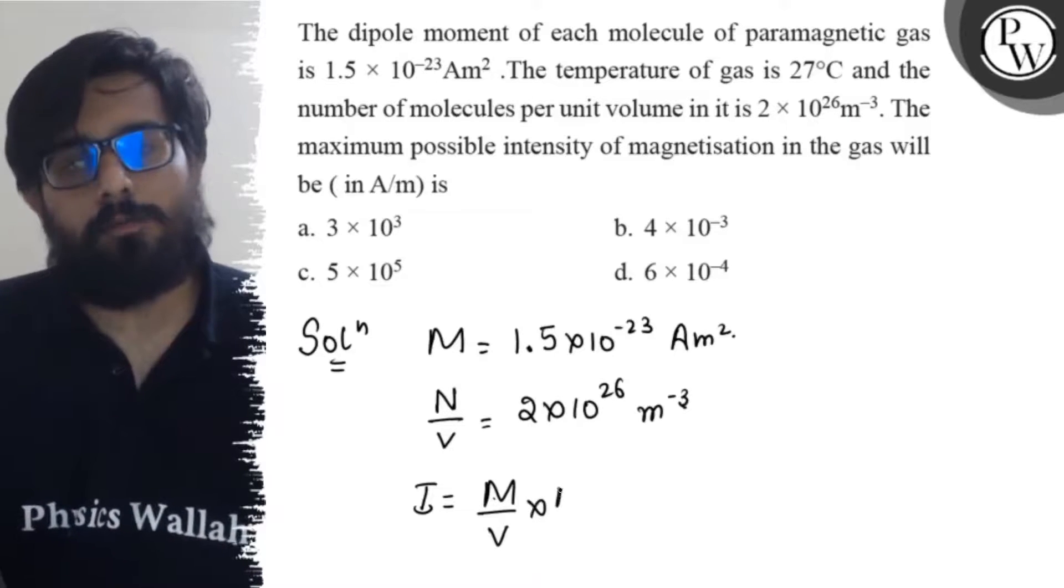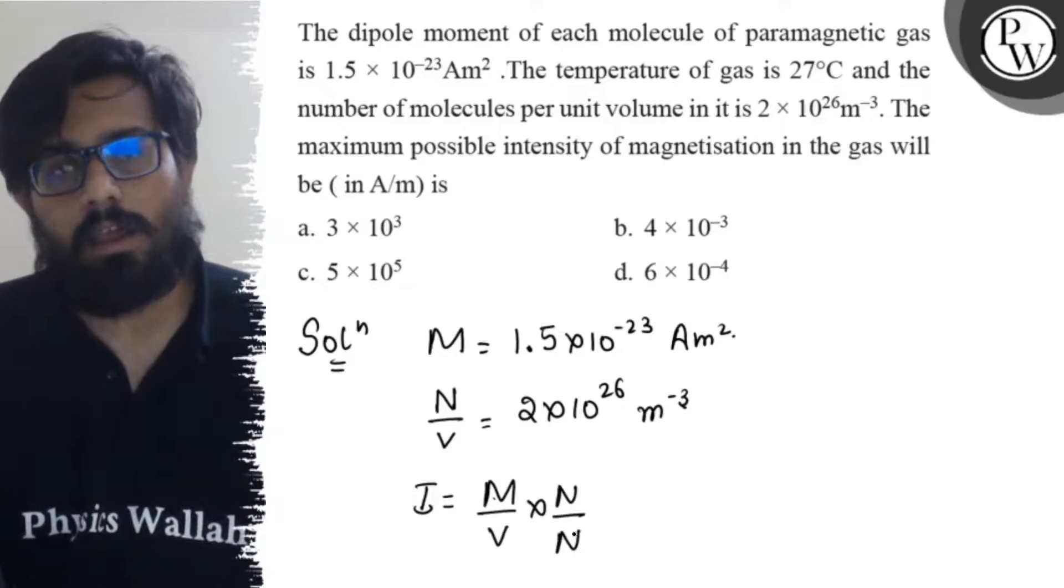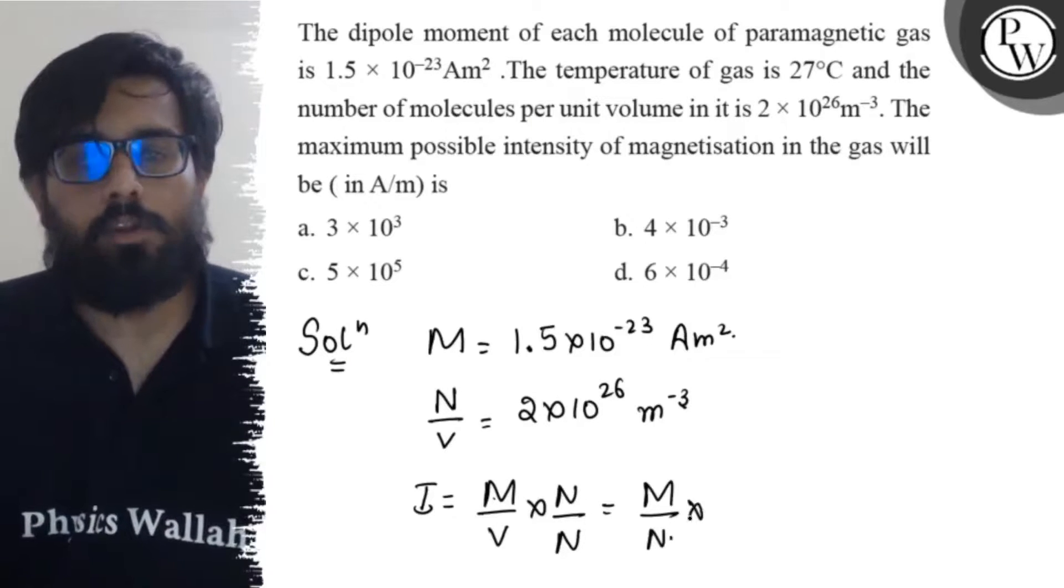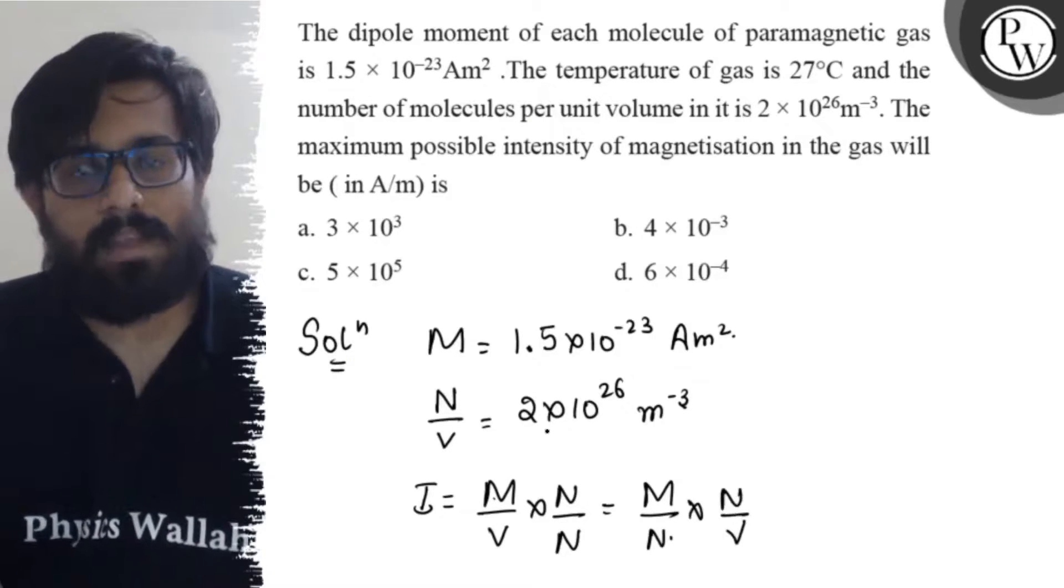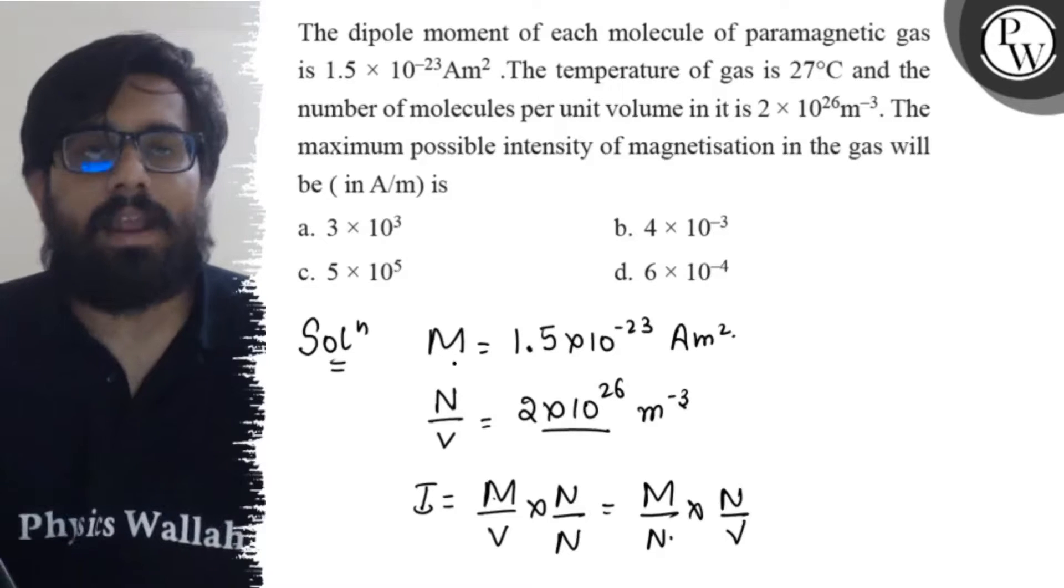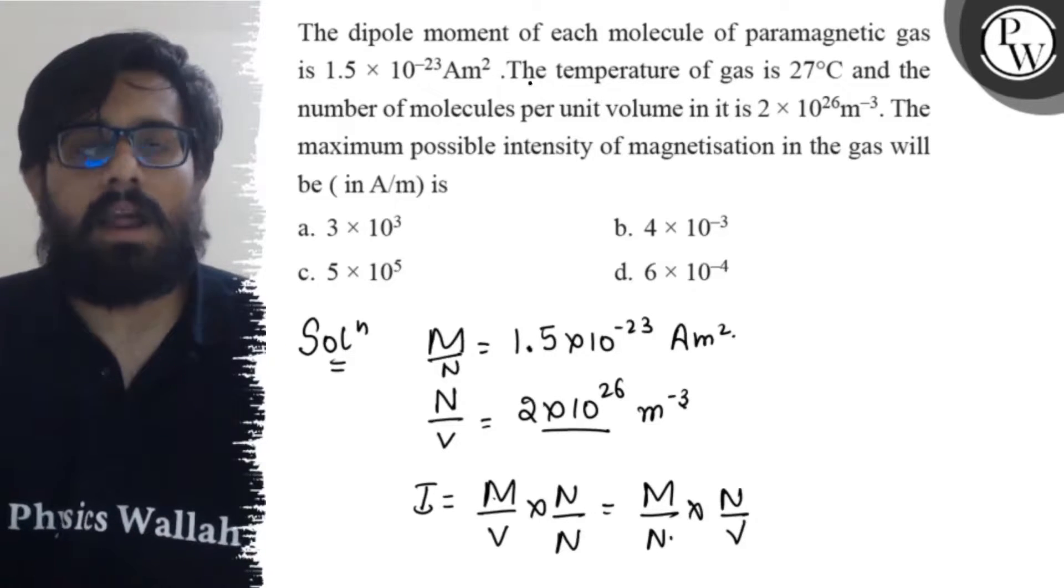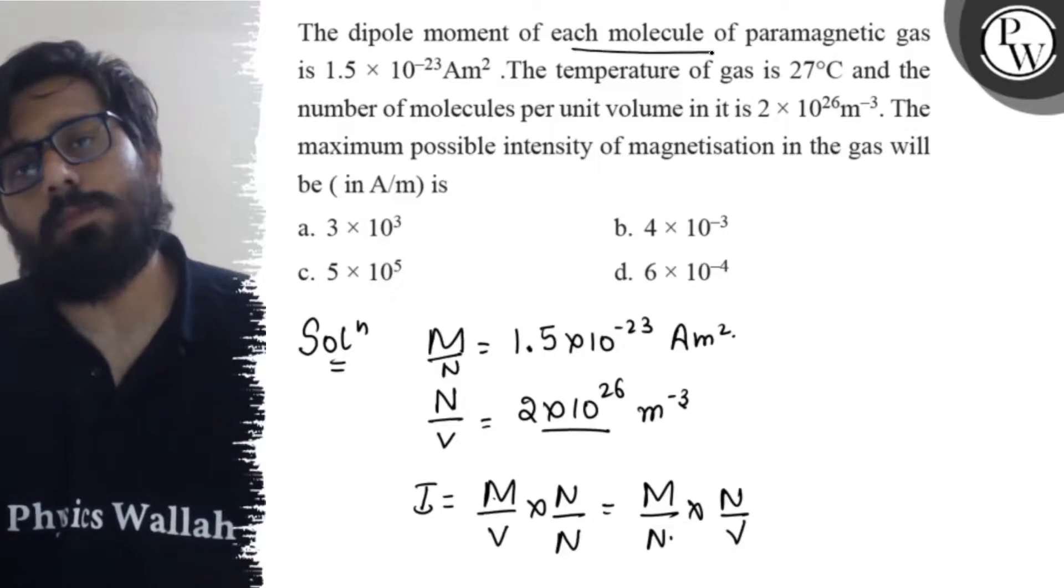If I divide by the number of molecules, it comes out to M/N times N/V. M/N is the dipole moment of each molecule, so this part is actually the dipole moment of each molecule.